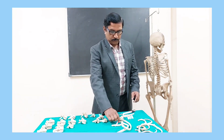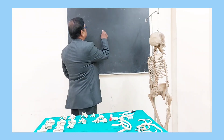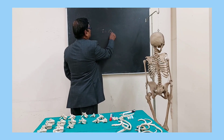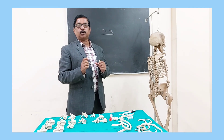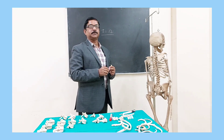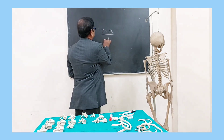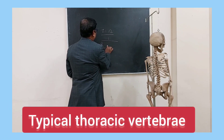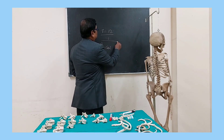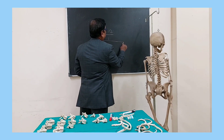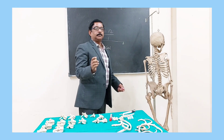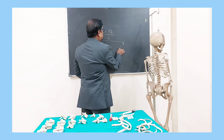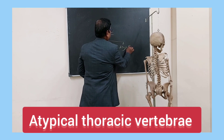The thoracic vertebrae are 12 in number. Of these, some vertebrae have common anatomical features and they are called typical thoracic vertebrae. Some thoracic vertebrae are different individually, meaning they have different anatomical features, and these are called atypical thoracic vertebrae.